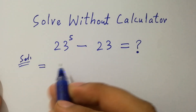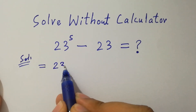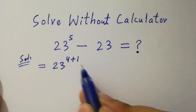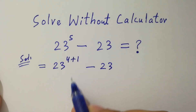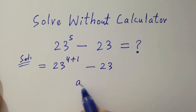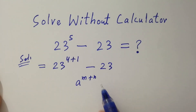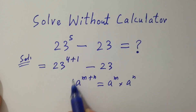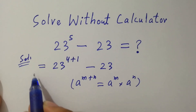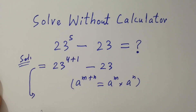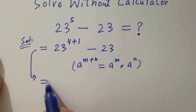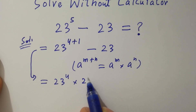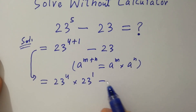This problem is the same as 23 to the power 4 plus 1 minus 23, since 4 plus 1 is 5. Using the rule a to the power m plus n equals a to the power m times a to the power n, it becomes 23 to the power 4 times 23 to the power 1, minus 23.